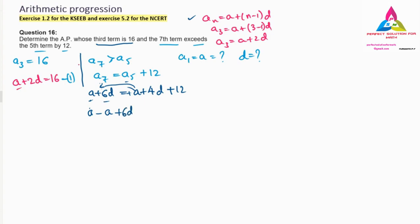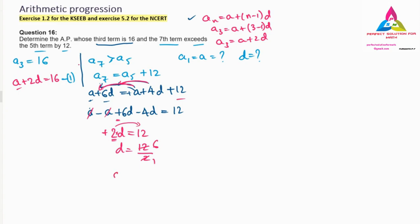Simplifying: a − a cancels, and 6d − 4d = 2d, so 2d = 12. Therefore d = 12 ÷ 2 = 6. We have found the common difference d = 6.